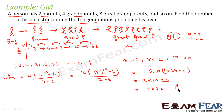This is the answer: 2046. So if you want to find the sum of all ancestors of this person across 10 generations, that is 2046. What have we done? We found that the sequence is a GP.